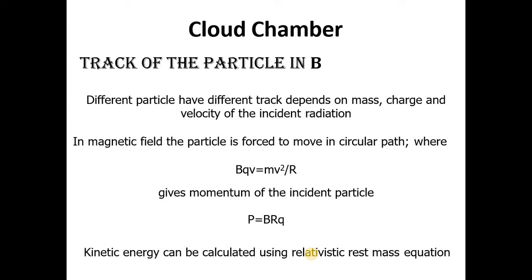Track of the particle in the presence of magnetic field. Now we are going to discuss the track of particle in magnetic field. Different particles have different tracks depending on mass, charge and velocity of the incident radiation. In magnetic field, the particle is forced to move in a circular path where magnetic force equals centripetal force: BQV equals MV square over R. This gives the momentum of incident particle as P equals BRQ. Kinetic energy can be calculated using relativistic rest mass equation.